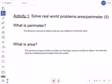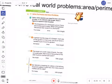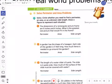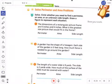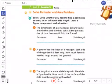So for today, we are going to be solving real world perimeter and area problems. Just like any good reader, good mathematician, you can read this with me. The black bold says solve, circle whether you need to find a perimeter, an area, or an unknown side length. Draw a figure to represent each situation.